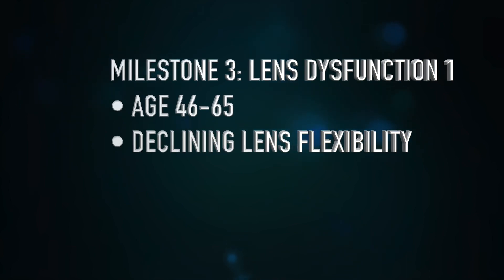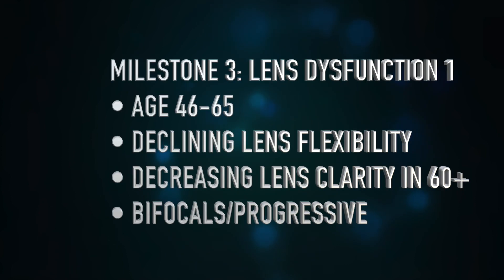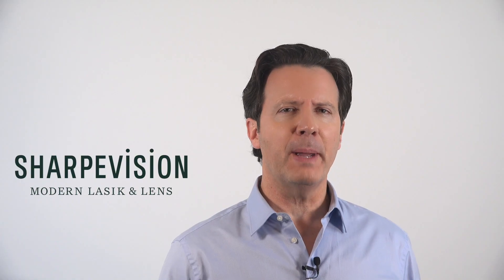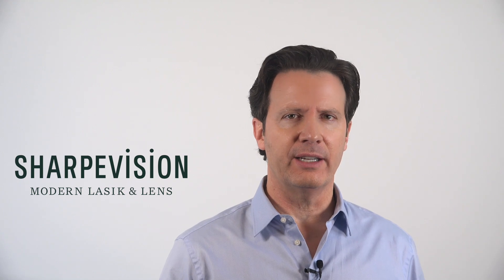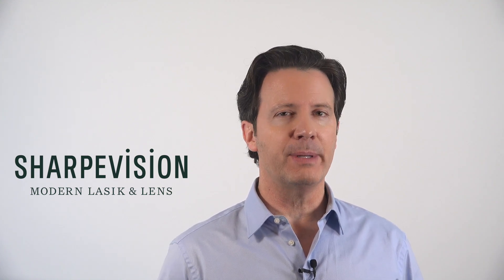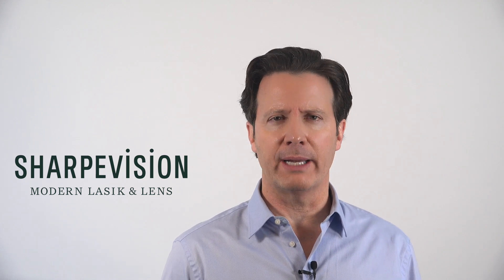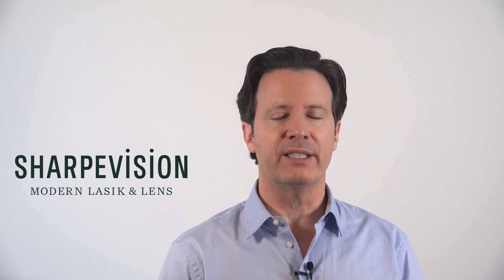Milestone three is sometimes called lens dysfunction. The lenses of our eyes get less flexible in our mid-40s, then less clear in our mid-60s when we develop cataracts. The lack of flexibility after age 45 means we cannot have perfect distance and near vision in both eyes. Glasses for nearsightedness, farsightedness, and astigmatism correct distance vision, but as the lens becomes less flexible, we must use no-line bifocals or progressive lenses to see near objects.